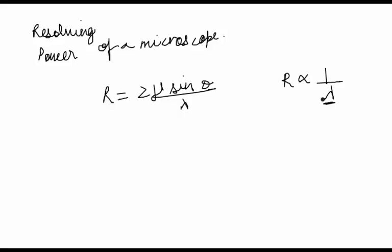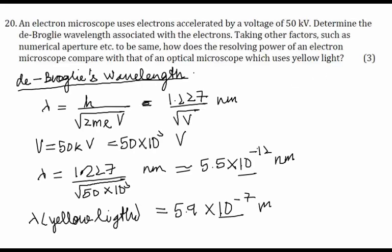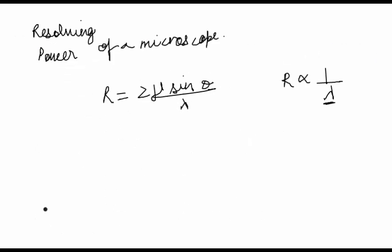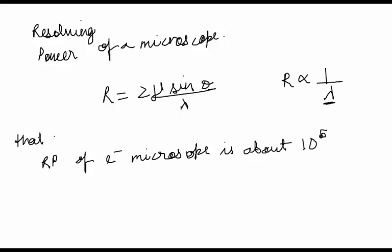This is the wavelength of the radiation used. So because we have come to this conclusion and we know both the wavelengths of yellow light and that of the radiation used, we can easily justify here that the resolving power of electron microscope is about or approximately 10 raised to the power 5 times that of an optical microscope.